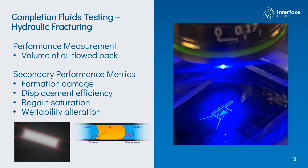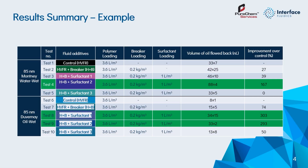The total volume of oil flowed back is the primary performance metric used to evaluate variables in your completion and stimulation fluids. The secondary performance metrics can also speak to how the chemical is working — and why it might not be working as well — because in this test we can sometimes see particular types of formation damage, like if solids are dropping out or wettability has been altered unfavorably. Displacement efficiency and regain saturations can speak to how a chemical is working, and because we have visual access to the chip we can also look at the contact angles of the oil to the channels inside the porous media, enabling us to see if there's any wettability alteration.